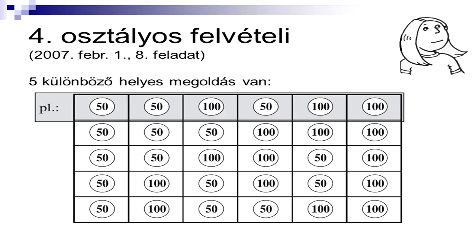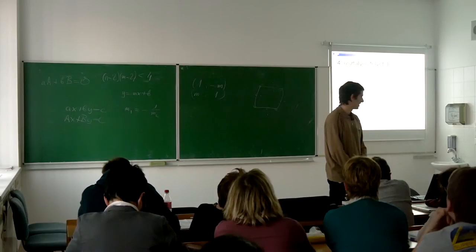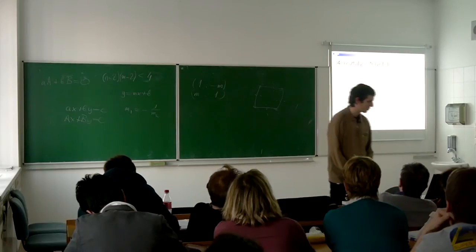Nem tanítok negyedikeseket. Egy valakit, amikor felvételire készítettem, ő nem tudott ezzel mit kezdeni. Igazából nem értette a szituációt. Az a gondolat nem volt meg neki szerintem, hogy minden egyes pillanatra nem lehet több száz forintos, mint ahány 50 forintos beérkezett. Ha ez már megvan, akkor ez már segíti a szisztematikus próbálkozást. Nem találtam sajnos részletes statisztikát a felvételiről. 2007-ben 21,9 pont volt az 50-ből. Ez volt a legalacsonyabb átlagpontszám 2007-től 2014-ig. Ez egy négypontos feladat volt, és talán ez is közrejátszott az alacsonyabb átlagpontszámhoz.